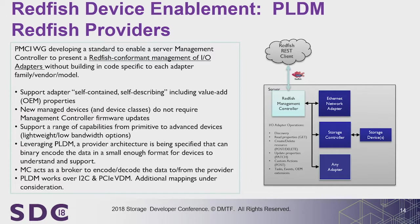There's a problem customers hate: my BIOS version has to match my BMC version, which has to match my device firmware version. Firmware is sent in bundles, a customer has a problem, flashes a Redfish firmware update, and everything else breaks. Why? Because to communicate with a storage controller, the storage vendor makes a library compiled into the BMC. To represent all that storage, you're literally hard-coded to a specific firmware version. If anything changes — mixed vendors, multiple devices from the same vendor with different APIs — it all breaks.